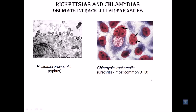Let us talk about the general properties of Rickettsias and Chlamydia, which are obligate intracellular parasites. In the left picture we are looking at Rickettsias and how they look when invading a cell. On the right-hand side we have a picture of Chlamydia trachomatis, which can cause trachoma disease and some diseases related to urethritis.